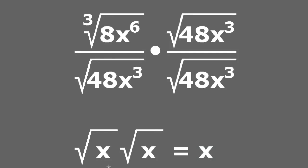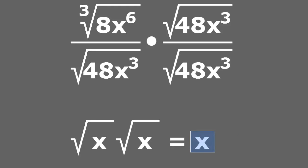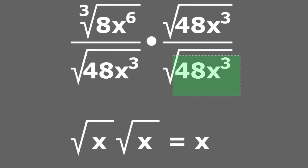Instead of x, you can have any number or any variable in place of it. Any two expressions, as long as they are inside of a square root and are multiplied by themselves — they are squared — they will equal whatever is inside the radicand. So the multiplication of the square root of 48x by the square root of 48x will simply equal 48x without any radical sign.